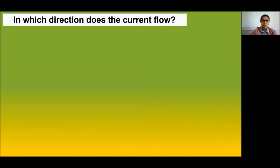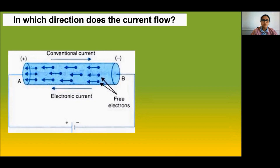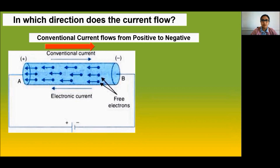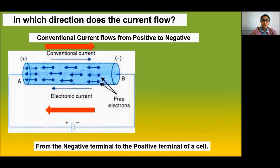In which direction does the current flow? Conventional current flows from the positive terminal of a cell to the negative terminal. Electron current flows from the negative terminal of a cell to the positive terminal.